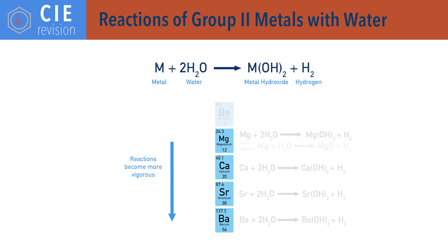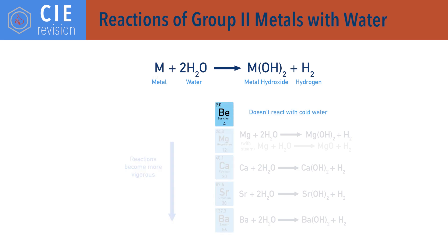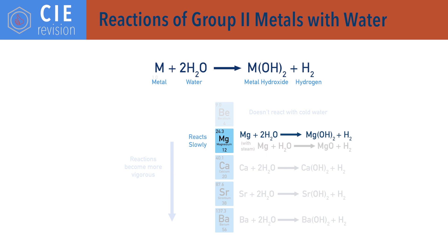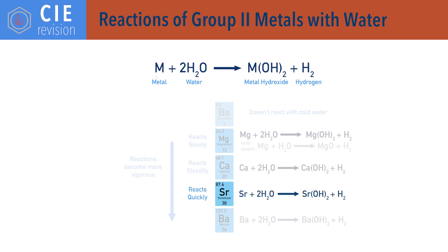Beryllium doesn't react with cold water, only high temperature steam. Magnesium reacts very slowly with cold water to form magnesium hydroxide; the reaction is slow due to insoluble magnesium hydroxide forming on the surface of the magnesium, inhibiting water from reaching the remaining solid. Magnesium reacts quickly with steam to form magnesium oxide. Calcium reacts steadily, strontium reacts quickly, and barium reacts rapidly with cold water.